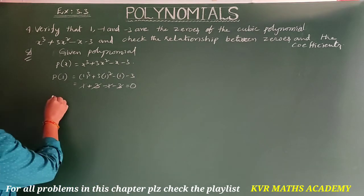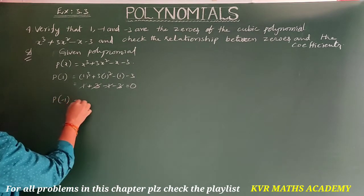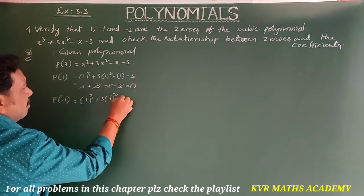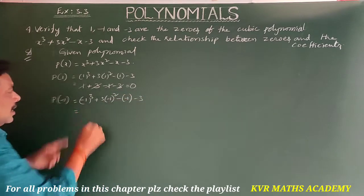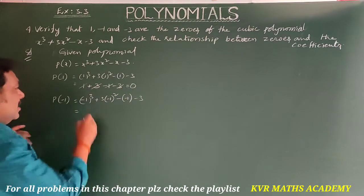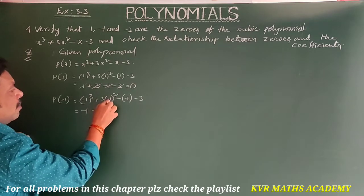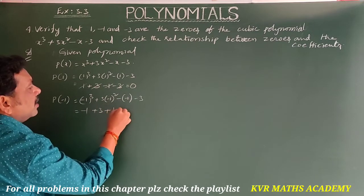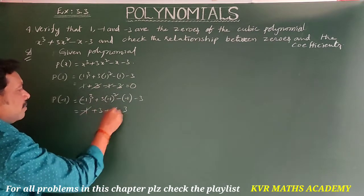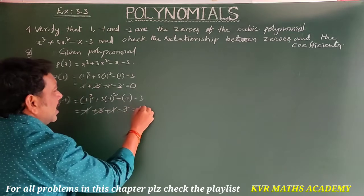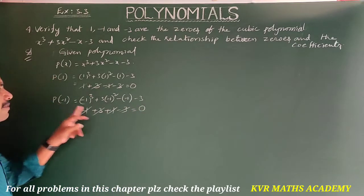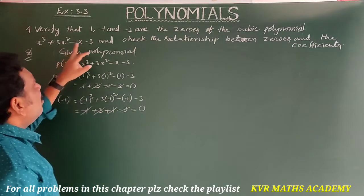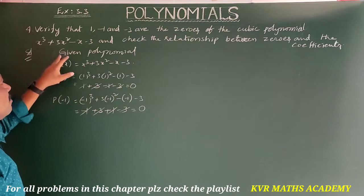Next, P(-1) = (-1)³ + 3(-1)² - (-1) - 3 = -1 + 3(1) + 1 - 3. Here -1 + 1 and +3 - 3 cancel, giving P(-1) = 0. So -1 is also a zero of the given polynomial P(x).